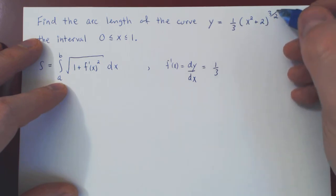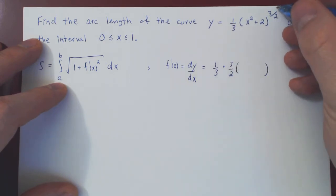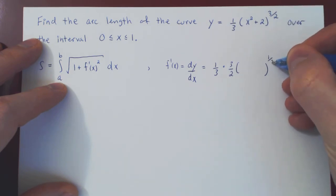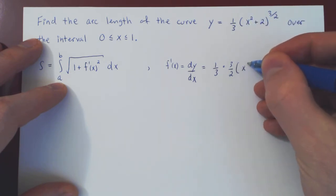So by the chain rule, we differentiate the outside function, the power of 3 half. So by the power rule, we bring the exponent down and subtract 1 from it. 3 half minus 1 is 1 half, of course. And we evaluate at the same argument, x squared plus 2.